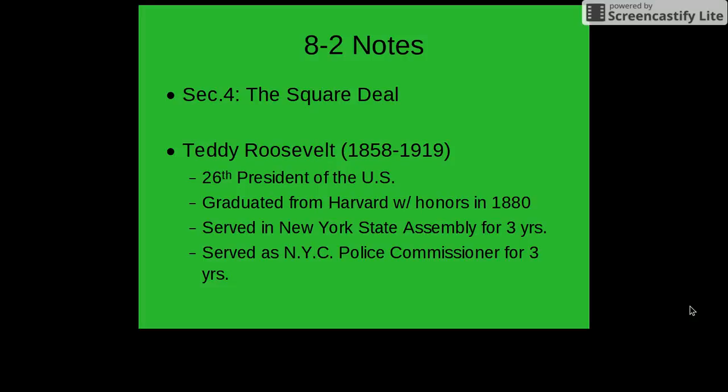Much of his drive for accomplishment and his famous athletic prowess is due to the fact that as a child, he was very ill with asthma and was a very weak child. His father built him a gymnasium inside their New York City mansion and urged Teddy Roosevelt to work hard, to exercise, to lift weights and build his body and mind to become strong. Many think this is a reason why he had such a drive for success and athleticism in his adulthood.